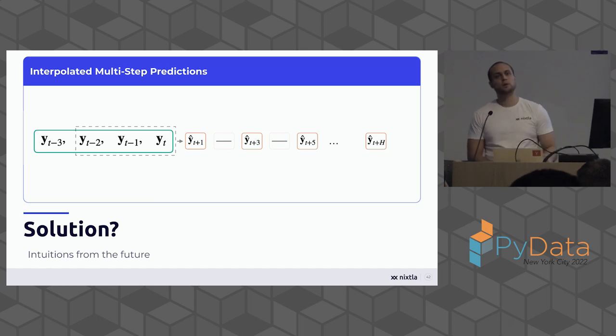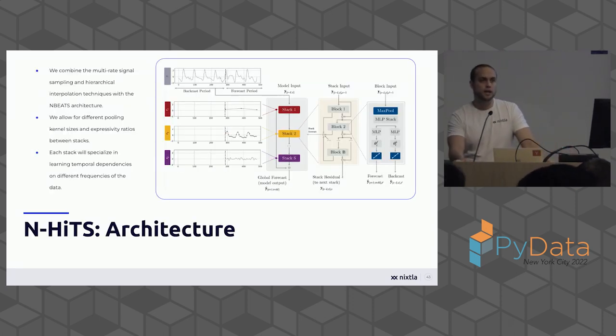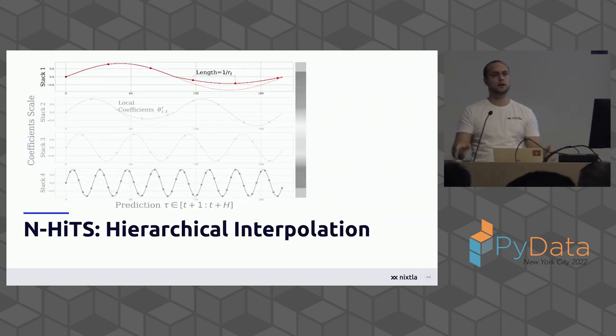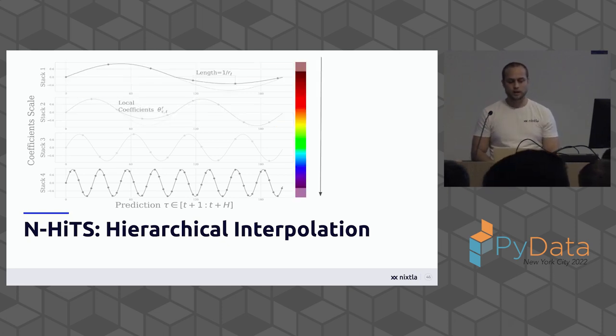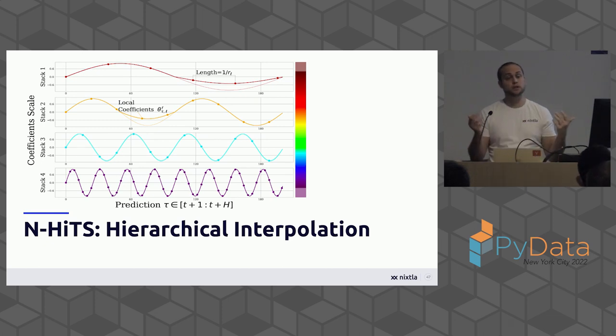And that intuition of interpolating between a multi-step approach is what we tried to develop in the N-HITS architecture, where we combine this multi-rate signal sampling and hierarchical interpolation with the techniques that we learned from the N-BEATS architecture. So what we are doing intuitively is we fix the multi-step horizon, and then we have different amounts of points. The fewer the points, the lower the frequency, and the more points we have, the higher the frequency. And what the neural network is doing here, what the N-HITS architecture is doing, is every stack is learning a different frequency. So at the beginning, the distance between the points is bigger, and then we start learning the different frequencies of the signal.